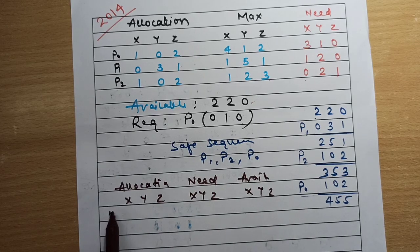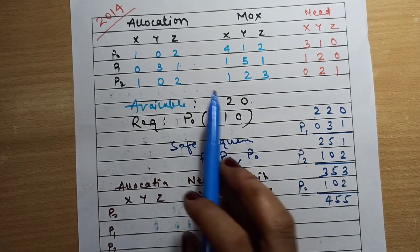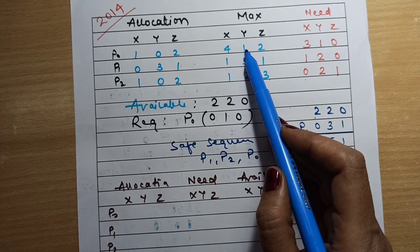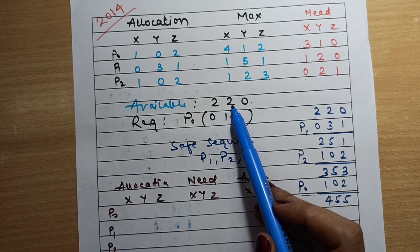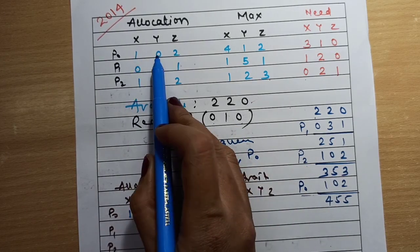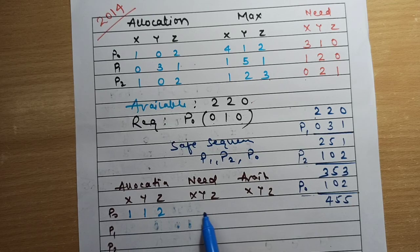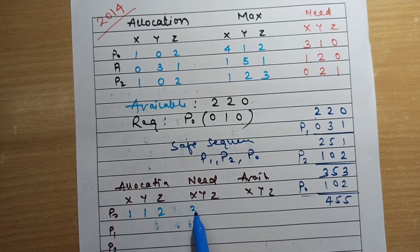Let's complete the updated table. After allocating the request to P0, P0's allocation becomes 0 1 0 — one more instance of Y. This is now equal to the max for that resource. The allocation for P0 is now 1 0 2 with one additional instance of Y added. Since we allocated one instance of Y to P0, the need for P0 changes: max was 1, now 1 allocated, so need becomes 3 0 0. Available resources decrease by the request, so available becomes 2 1 0.